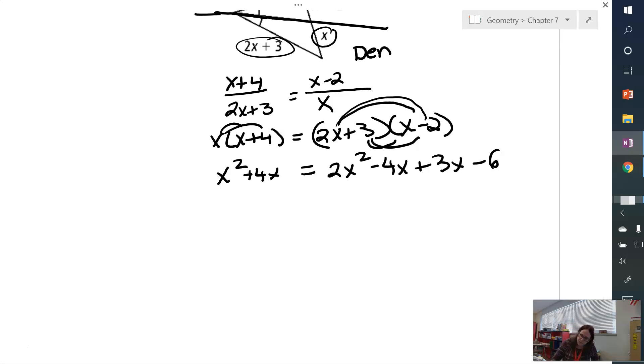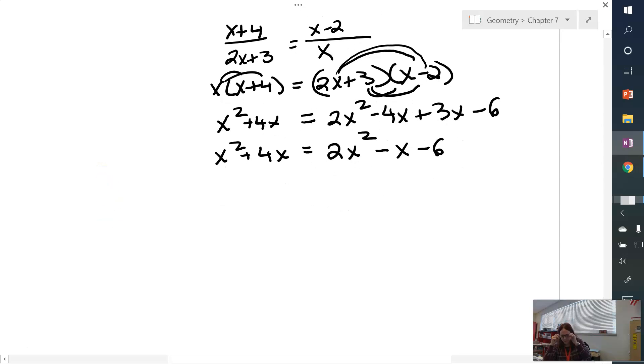So, now I've got some quadratics going on here. Let's start combining like terms. So, I get x squared plus 4x equals 2x squared minus x minus 6. Now, anytime you have a quadratic to solve, you want to set one of your sides equal to 0. So, what I'm going to do is I'm going to subtract x squared from both sides. That's going to leave me 4x equals x squared minus x minus 6. And now, subtract the 4x from both sides. I get 0 equals x squared minus 5x minus 6.